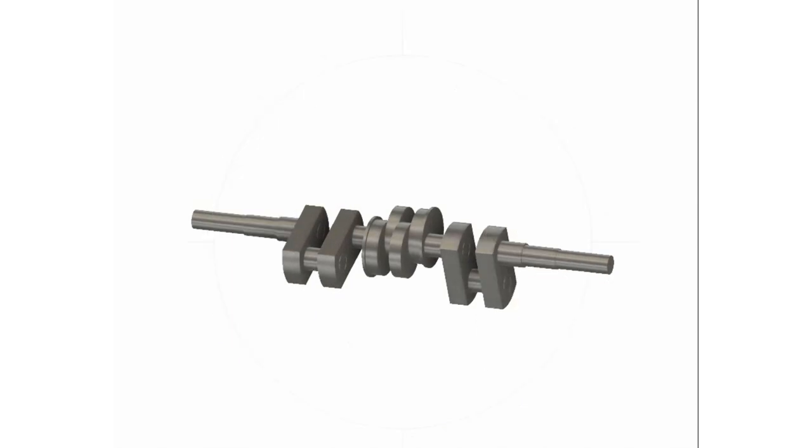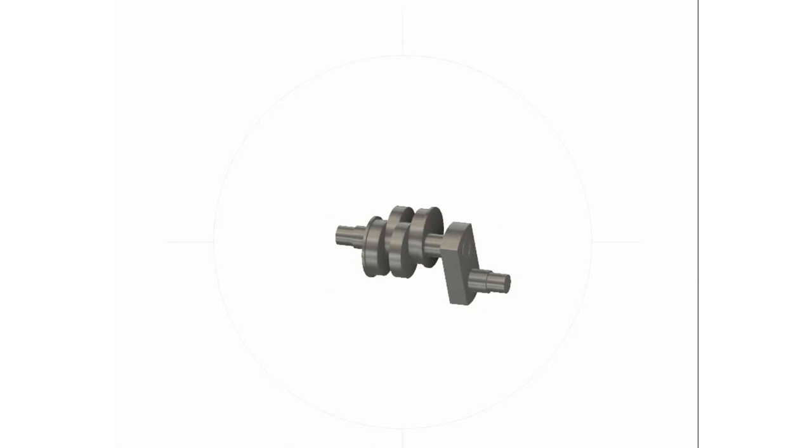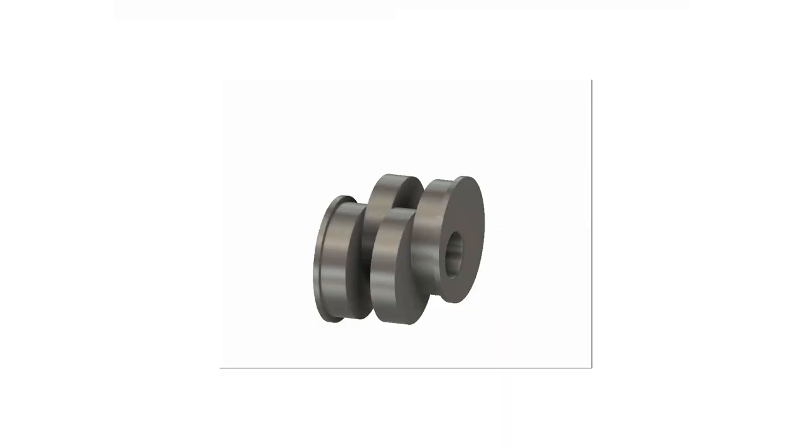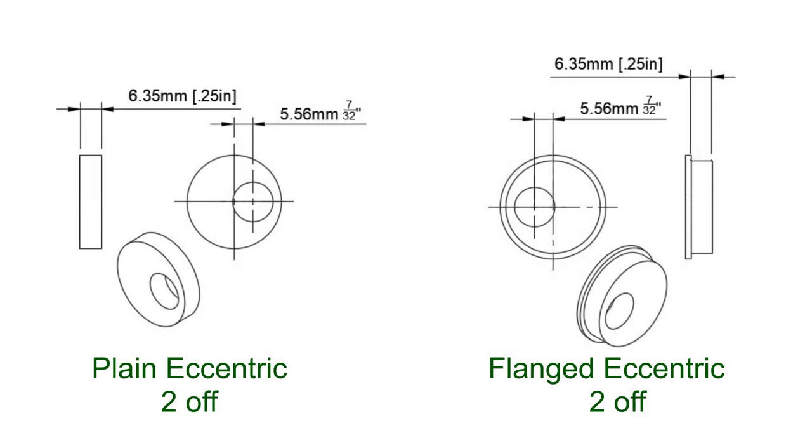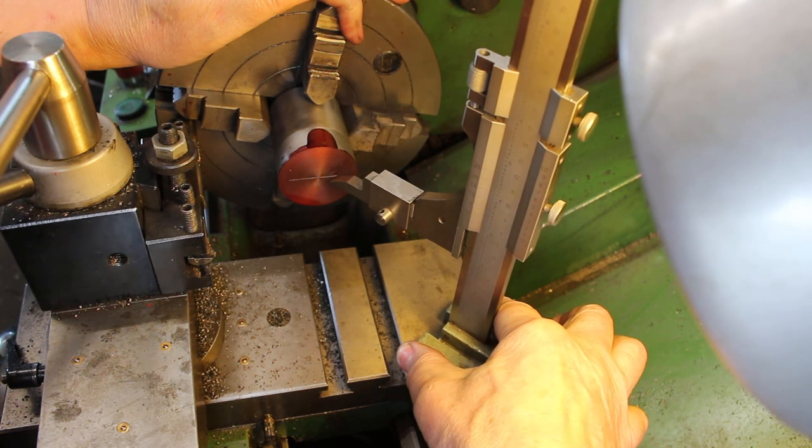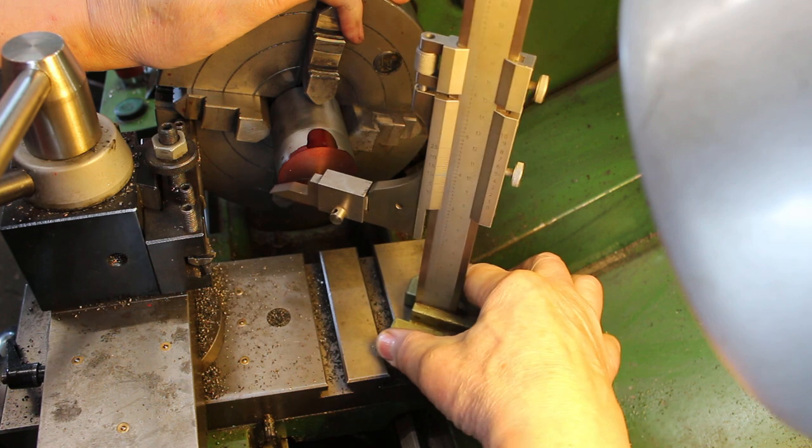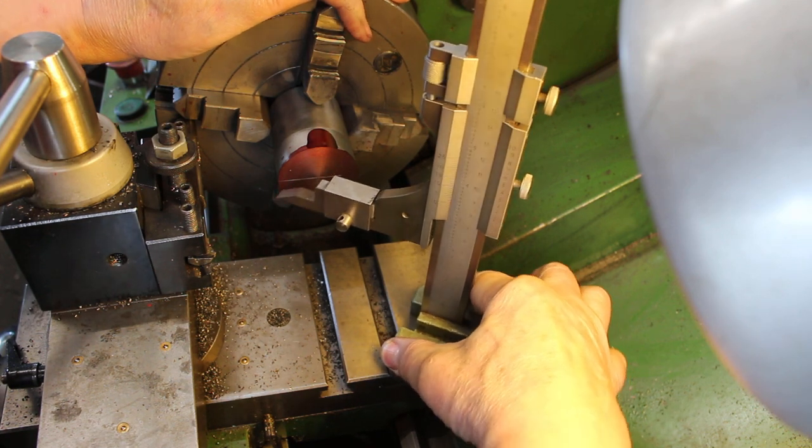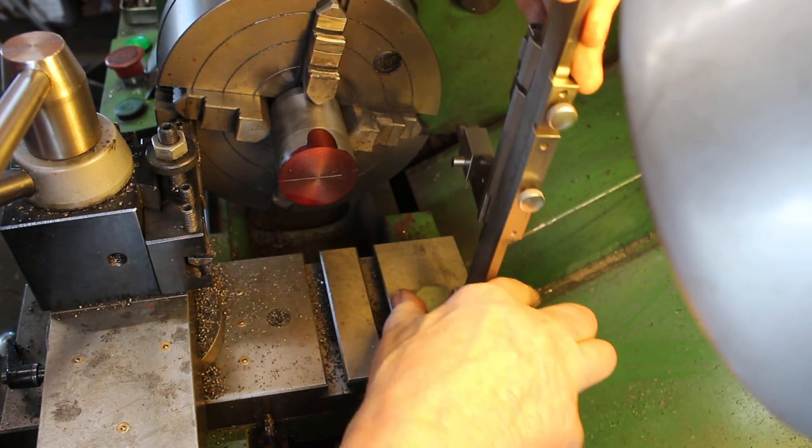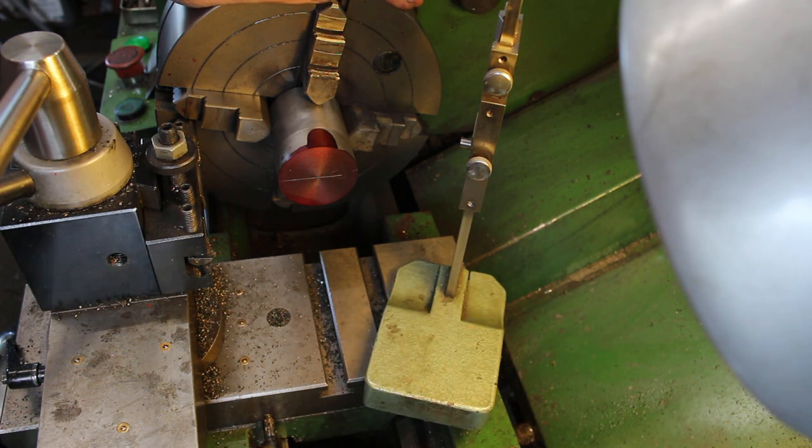In this video I'm going to continue with the crankshaft and make the eccentrics. I've turned up a piece of cast iron bar and I'm marking some center lines on the end.